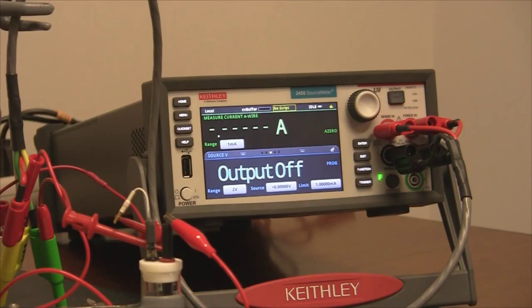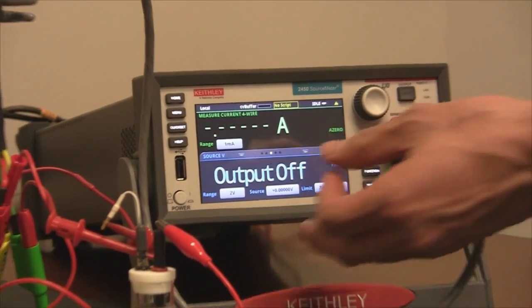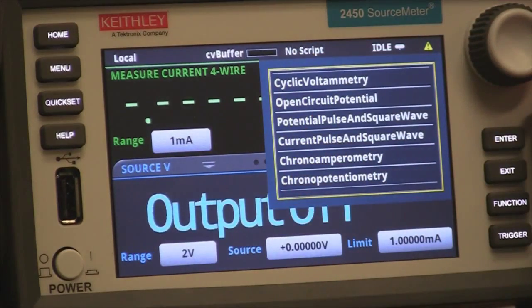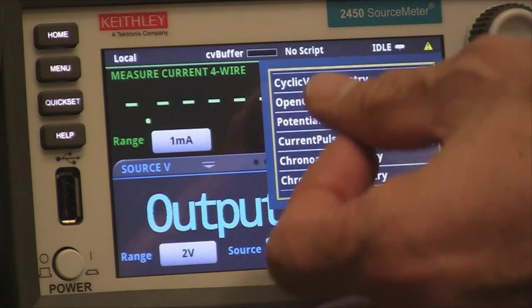Okay, so let's run the experiment. Here you can see the electrolytic cell is all connected. To run the experiment you simply go up here where it says no script and you push the button, and you'll see all the scripts that are loaded into the instrument. All we do here is select the cyclic voltammetry script.